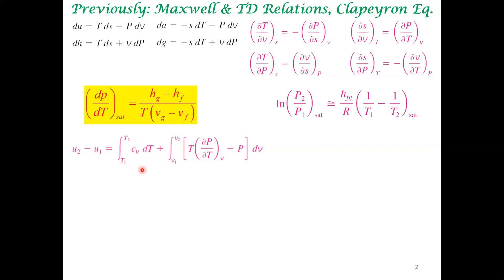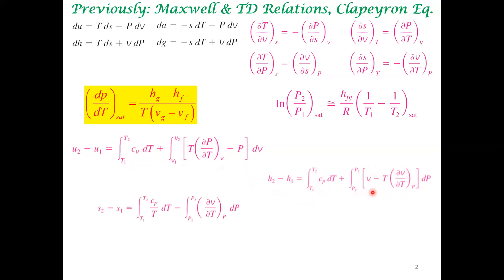In a very similar manner, using those three features — starting with an exact differential, using the appropriate TDS relationship, and then a Maxwell relationship — you get changes in enthalpy. That depends upon heat capacity at constant pressure, and these are all fairly easily measurable. Likewise, we looked at changes in entropy. Heat capacity measurements are very useful and help in expressing changes in internal energy, enthalpy, and entropy.